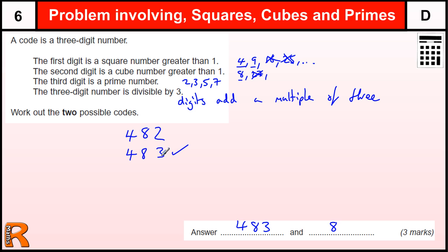OK, if I use 5 instead of the 3, it's not going to be a multiple of 3. If I use the 7 instead of the 3, that's not going to be a multiple of 3 because that adds up to 19. So that's all the possible ones with a 4 in the front.